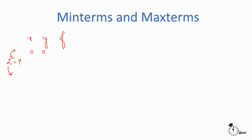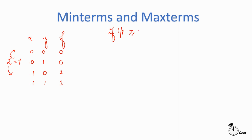So we have 0 0, 0 1, 1 0, and 1 1. Say I want to design the circuit such that the output will be high or 1 when the inputs put together are greater than or equal to 2. So this is 0, this is 2 and 3 as per our decimal representation. The output will not be high for 0 and 1 but it will become high for 2 and 3. This is represented in a tabular column known as the truth table.